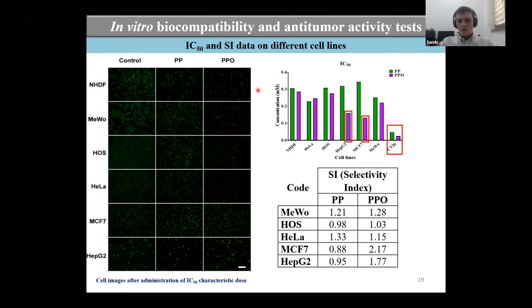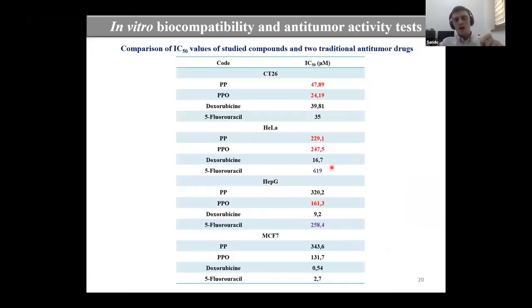Here you can see in this graph the median inhibition concentration of these two compounds on each cell line and also its selectivity index for each cell line. Our results we compared with other results published in literature for doxorubicin and 5-fluorouracil and in some cases our results are better than those from literature.